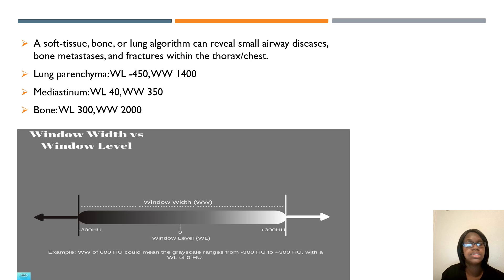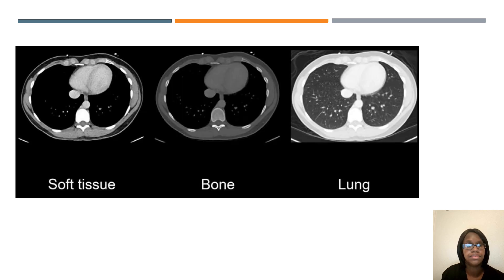These are the numbers you need to commit to memory for window level and window width for the chest. This shows your soft tissue window level and window width, your bone, and your lung settings. If you don't know how to window level, you can use the mouse cursor at your workstation to move the mouse back and forth and up and down to brighten or darken the images.